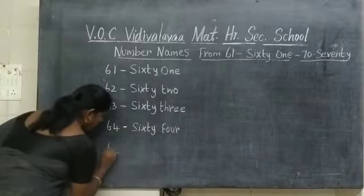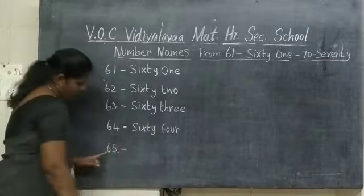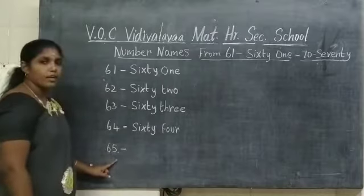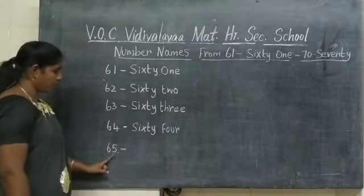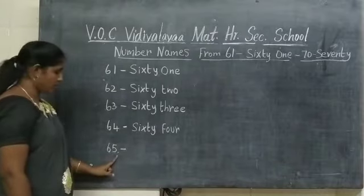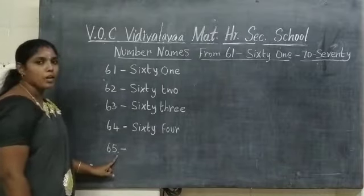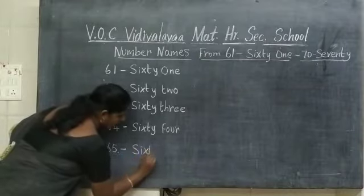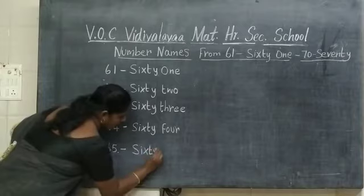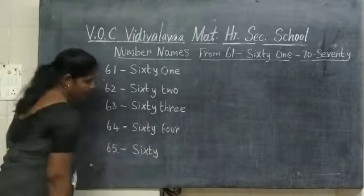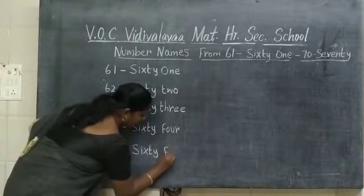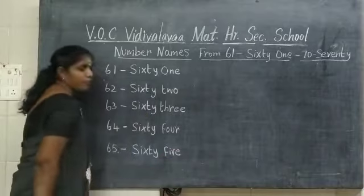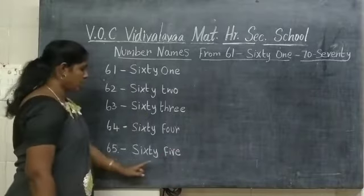65. What number is this? 65. What is the spelling of number 65? S-I-X-T-Y F-I-V-E. 65.